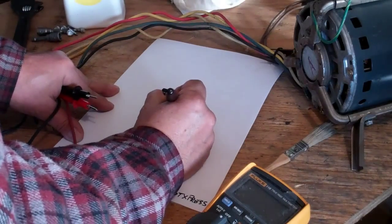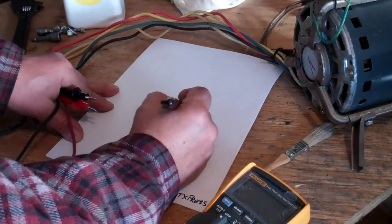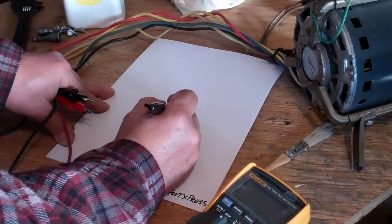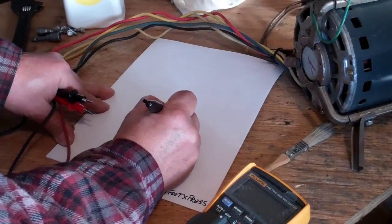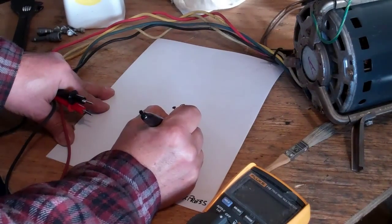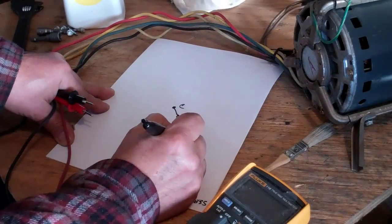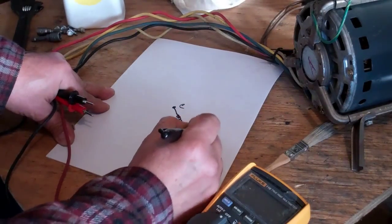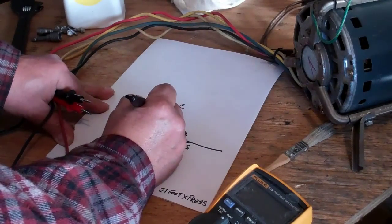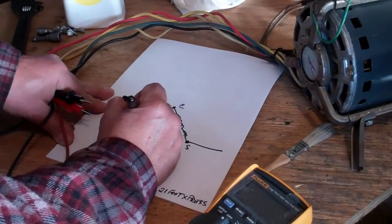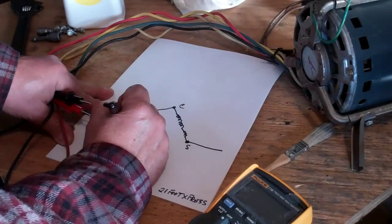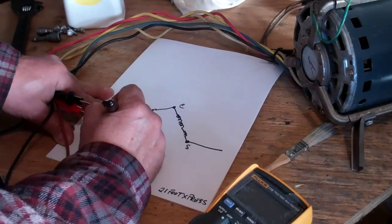What we've got here is one terminal called the common terminal C for now and it's got some windings coming out of there, probably some resistance and this is the S terminal. There's a line coming out of there. There's another set of windings because an AC motor won't start itself unless you have a separate set of windings and this is called the